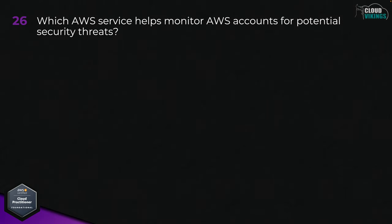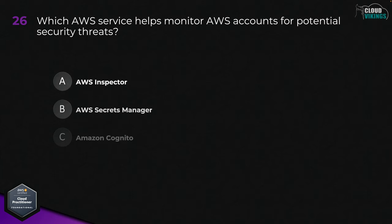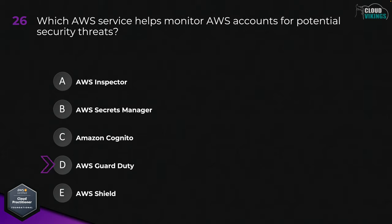Question twenty-six: which AWS service helps monitor AWS accounts for potential security threats? Options are: A, AWS Inspector; B, AWS Secrets Manager; C, Amazon Cognito; D, AWS GuardDuty; or E, AWS Shield. The correct answer is D, AWS GuardDuty.